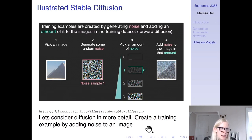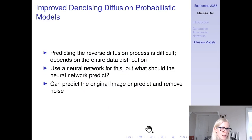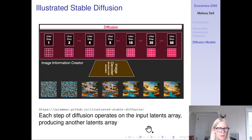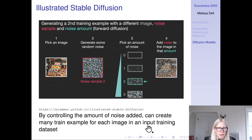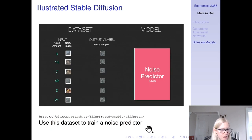You can create training examples by generating noise and adding an amount of noise to the images in the training dataset — this is called the forward diffusion. You can generate many training examples from a single image by just adding different amounts of noise. You pick an amount of noise and you know how much noise you've added, and this allows you to create many training examples from your input training data.